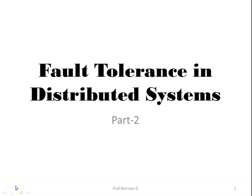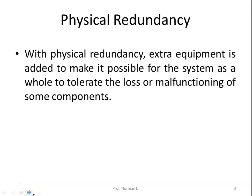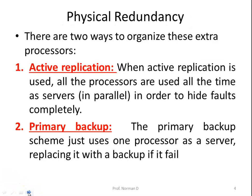In this session we'll discuss physical redundancy with respect to fault tolerance in distributed systems. We'll discuss fault tolerance using active replication and using primary backup. In the previous session we already discussed physical redundancy, where some extra equipment is added to make it possible for the system as a whole to tolerate the loss or malfunctioning of certain components. There are two ways to organize this: active replication and primary backup.